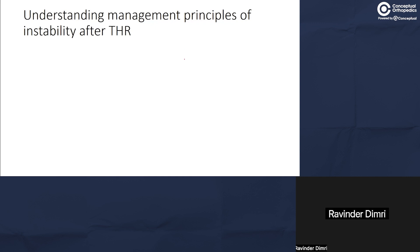As we discussed last time, we covered the different causes of instability and how to clinically diagnose and categorize them. Today we will understand the management principles — not in detail, but why sometimes we change the liner, sometimes the component, and sometimes we can get away with just putting a bigger head or changing the offset. These are the basic principles of primary total hip replacement as well as revision.